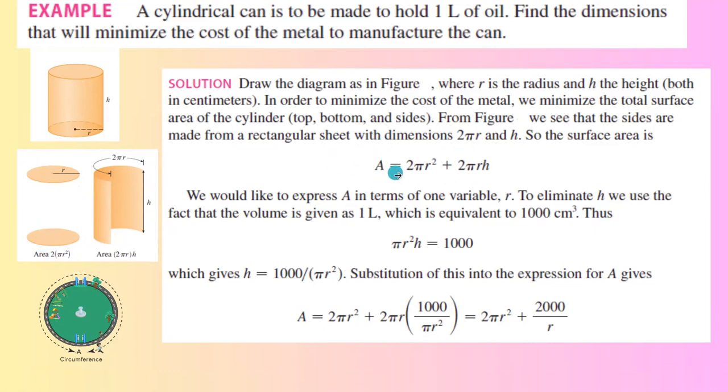So the surface area is going to be 2πr² (one πr², one πr²), which is 2πr² plus the area of this rectangular object which is 2πrh.